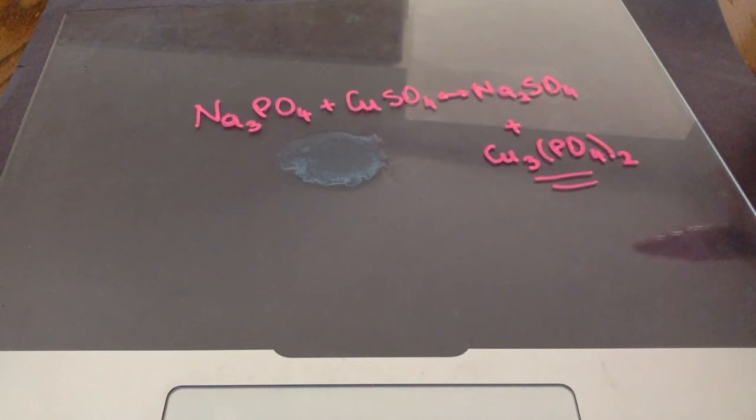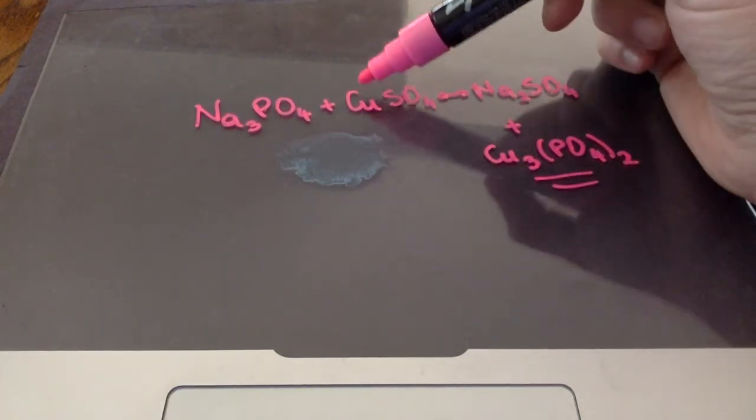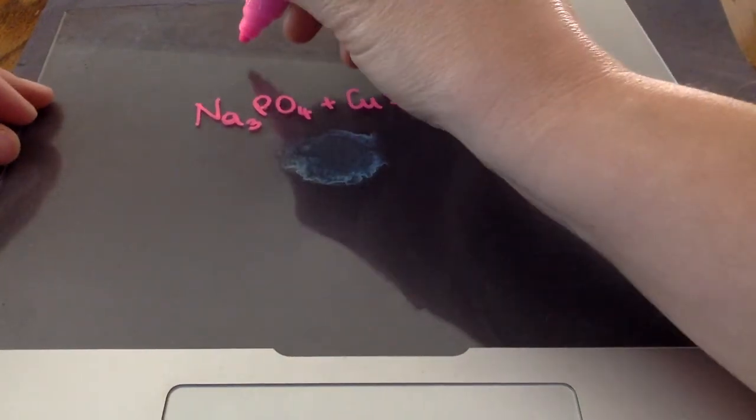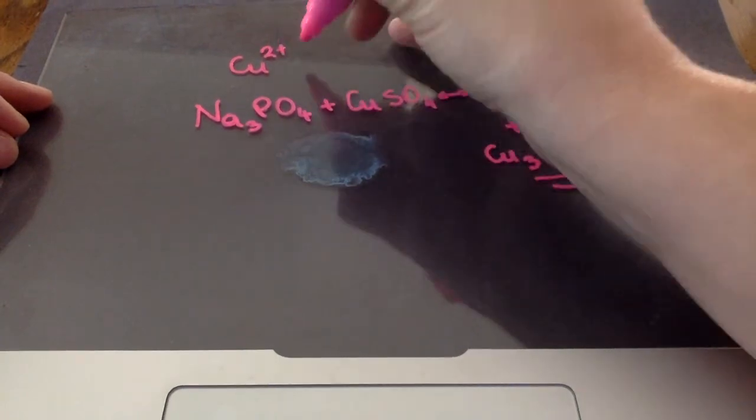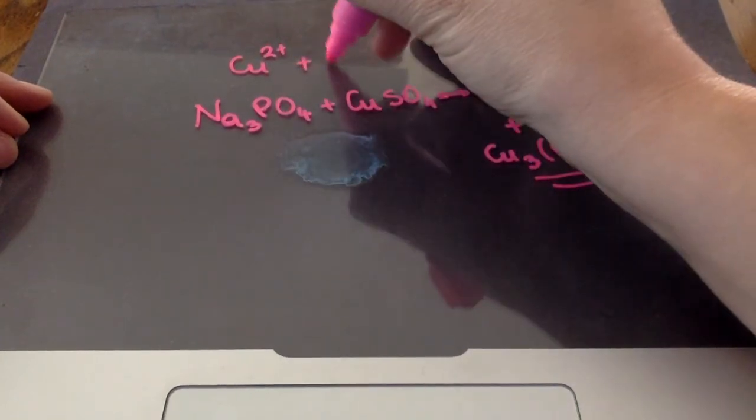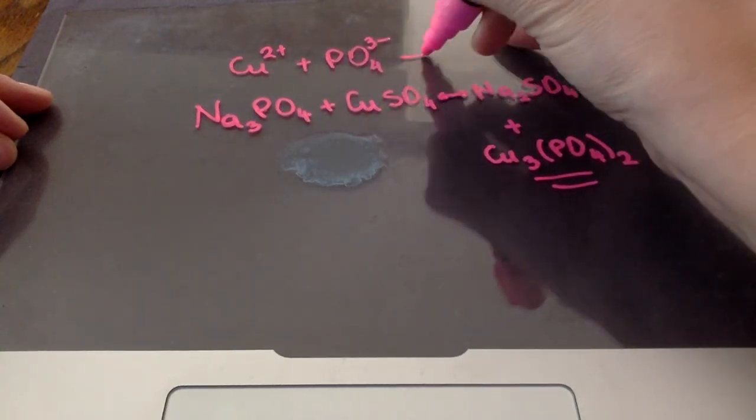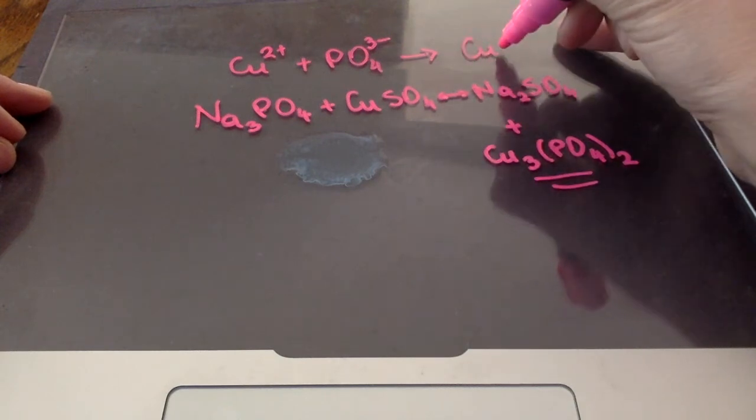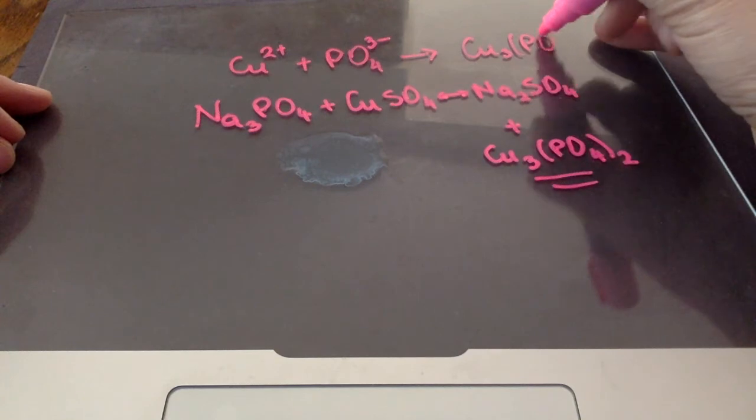This is what forms the precipitate. The ions that form this precipitate are copper 2-plus and phosphate 3-. So, I go up here and write copper 2-plus plus PO4 3- gives me copper 2-phosphate.